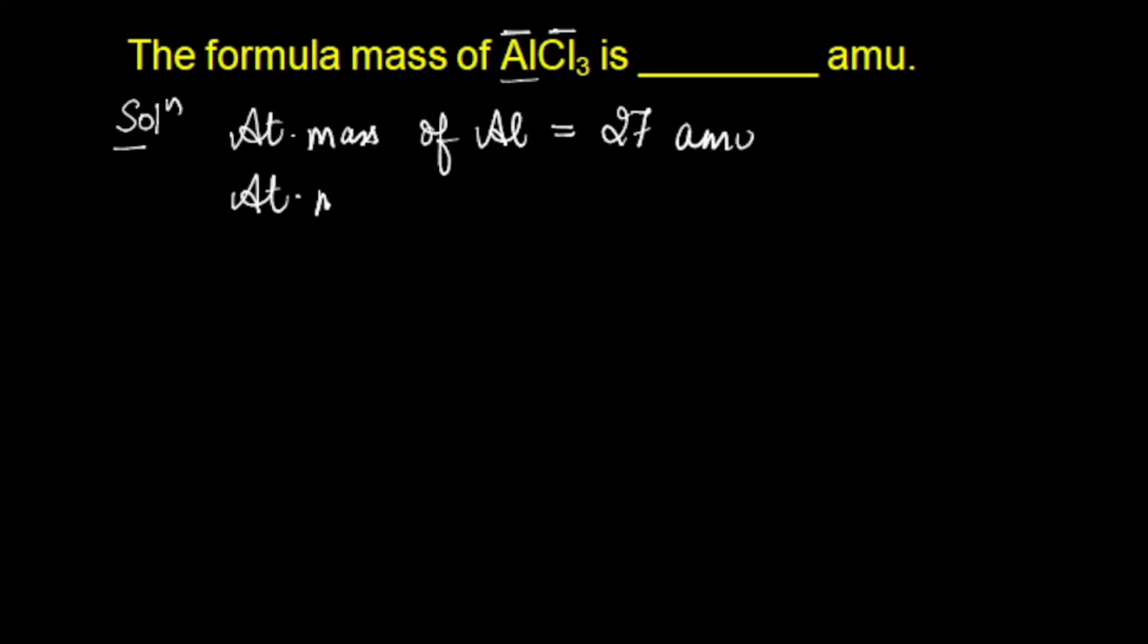And atomic mass of chlorine is equal to 35.5 amu. Now the formula mass of AlCl3 can be calculated as